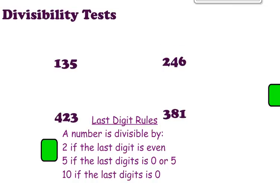For 5: if the last digit is a 5, we can say yes, that number is divisible by 5. Also if the last digit is a 0 — numbers like 5, 10, 15, 20 — there is a pattern there. And the rule for 10 is if the last digit is 0. None of the numbers on the screen end in a 0, so none of them are divisible by 10.